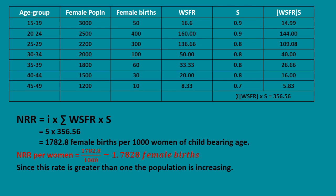Now with the WSFR values computed, the NRR formula is: NRR = i × summation of (WSFR × S), where S is the survival rate. Be careful with this formula — the summation involves multiplying each WSFR value by its corresponding survival rate.